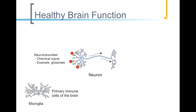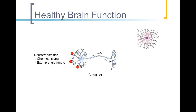Microglia are the primary immune cells of the brain. They're highly sensitive, and when they detect pathogens or any kind of injury or damage, they rush to signal other glial cells and attack whatever is invading. Microglia are the brain's alarm system, or panic button.